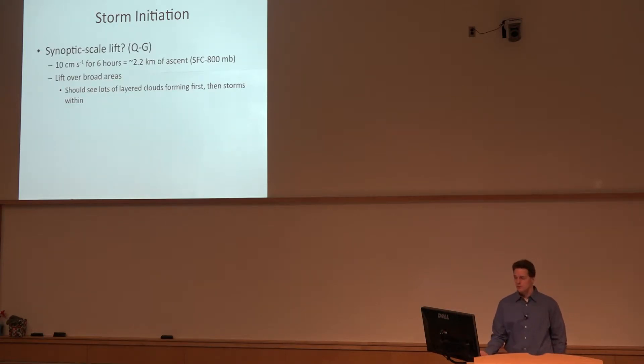Storm initiation. We've talked about QG theory a little bit and the scale of ascent. Just as a reminder, 10 centimeter per second ascent over six hours results in a little over two kilometers of vertical displacement. You should see cloud formation and lift over broad areas and storms will just pop up within the broader cloud sheets if it's truly large-scale ascent initiating the storms.